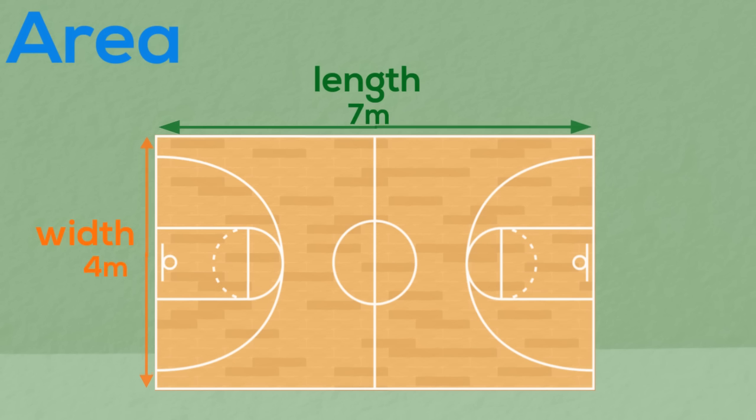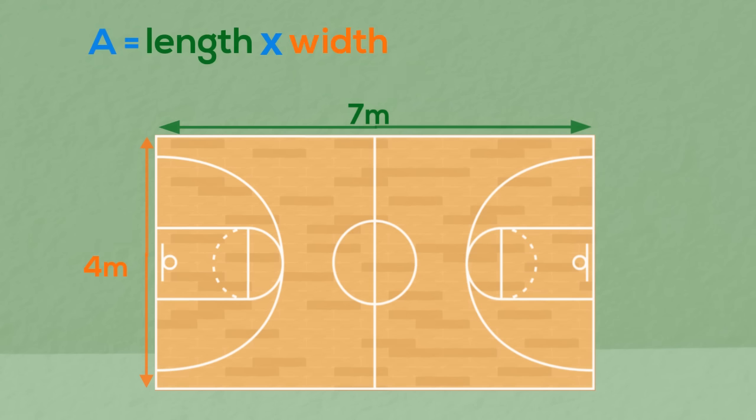The rule for calculating the area of a rectangle is length times width. So, to calculate the area of this rectangle we must multiply 7 metres by 4 metres. 7 times 4 equals 28. The area is 28 square metres.